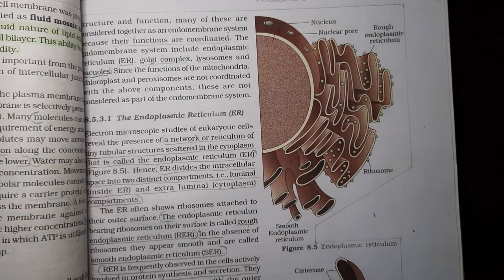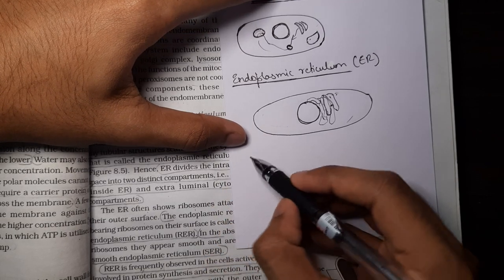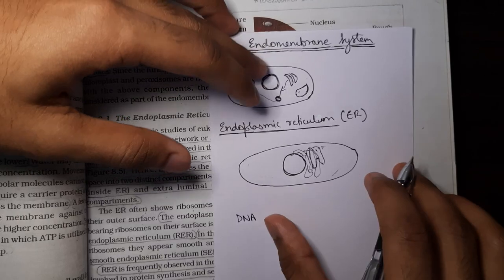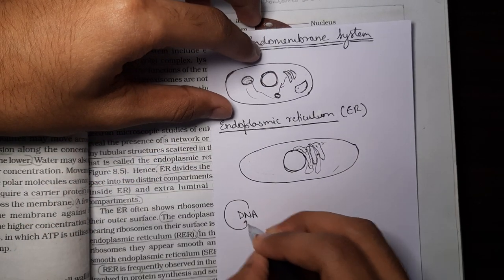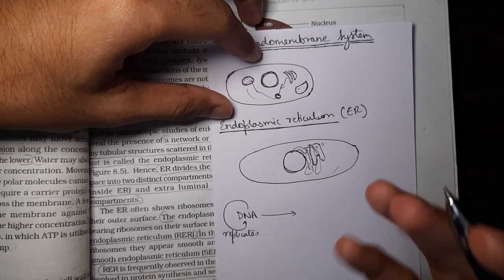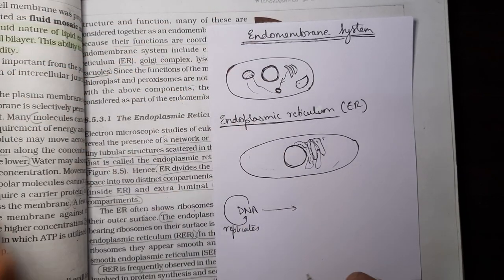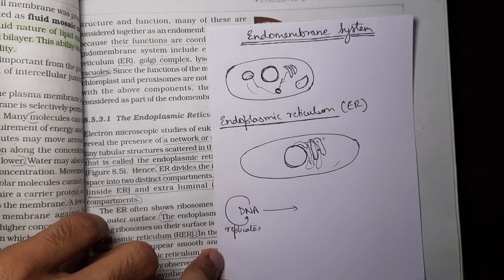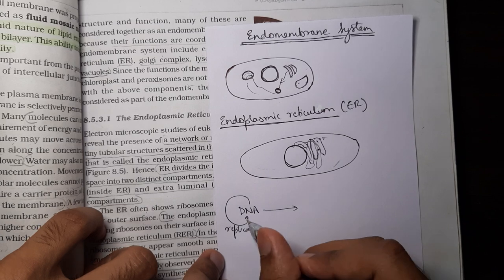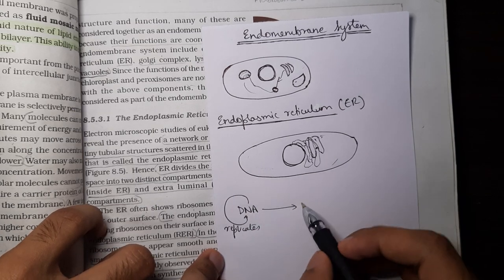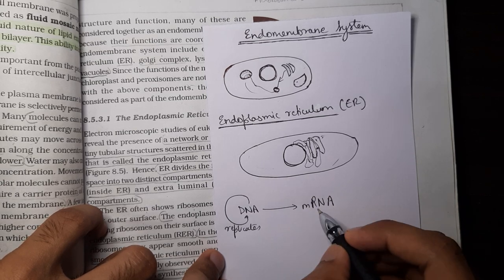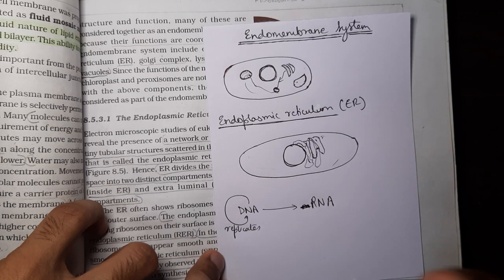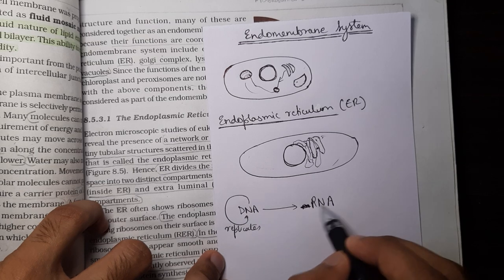How is protein produced in a cell? There is the central dogma of molecular biology: all information is present in the cell as DNA. The DNA self-replicates, then forms mRNA, which is a simplified version of the DNA. This process of conversion from DNA to RNA is called transcription. RNA then forms protein — this process is called translation, and translation is carried out by ribosomes.